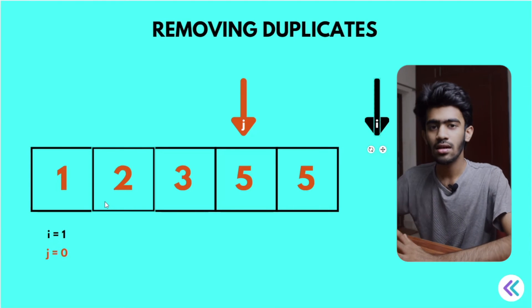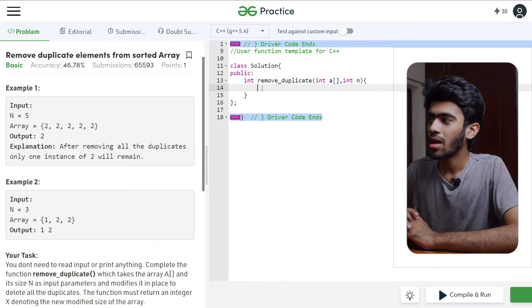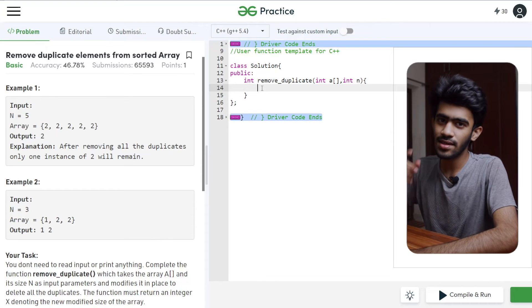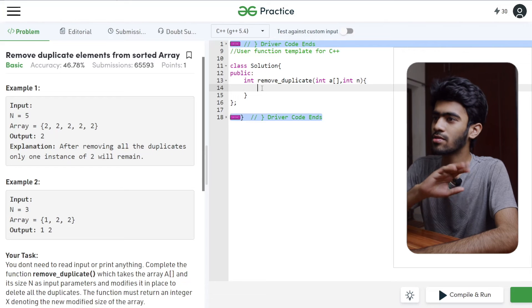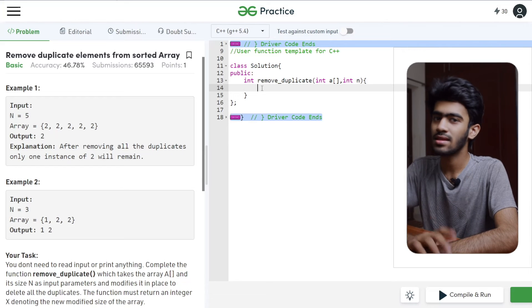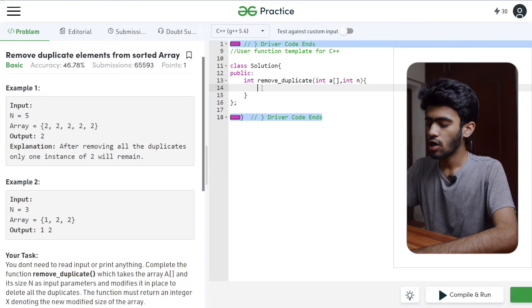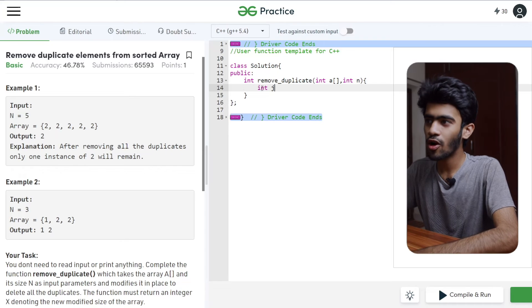In the coding, first we have a pointer. For this pointer, we can remove the duplicates. So the pointer, we have a pointer for loop.